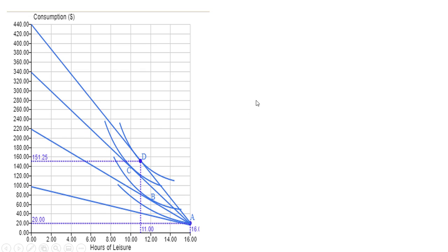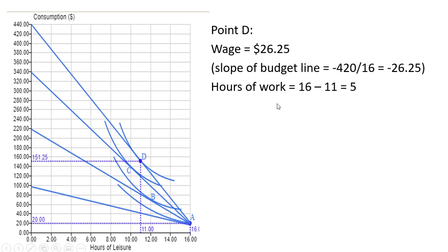Point D, we have even a higher wage yet. At point D, the wage is $26.25. Hours of work here is 16 minus 11, or 5.